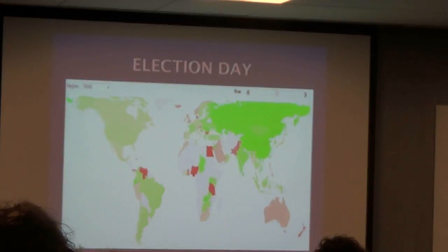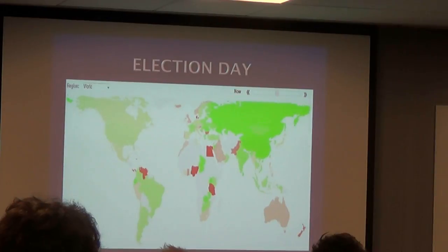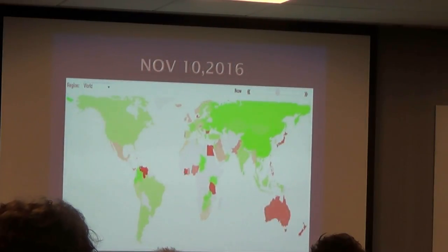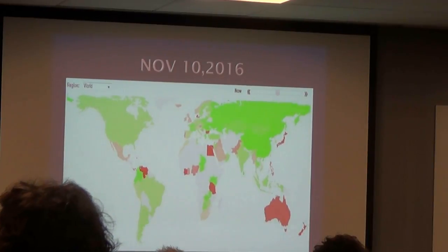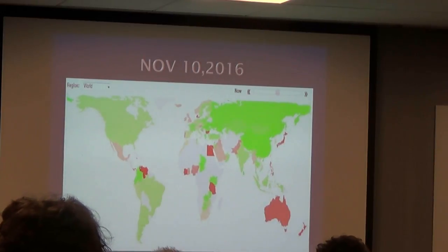How about here? Well, here's election day. This was the day of the election, and you can see that we're sort of green to gray in most parts of the world — that was the prediction for Tuesday. Then on November 10th, which was the day after the election, I looked from my hotel room to see what it looked like. And basically, it doesn't look like Brexit — it looks pretty much green.